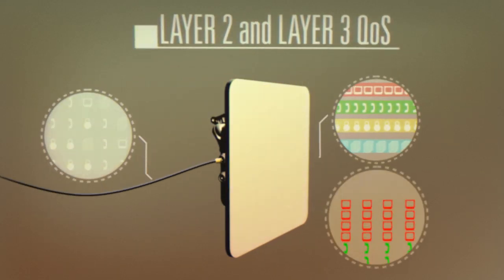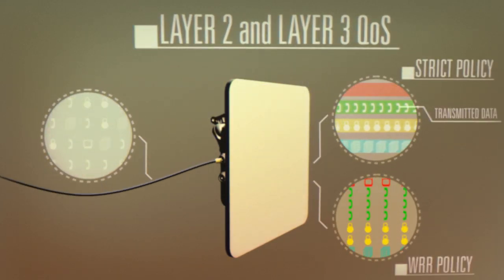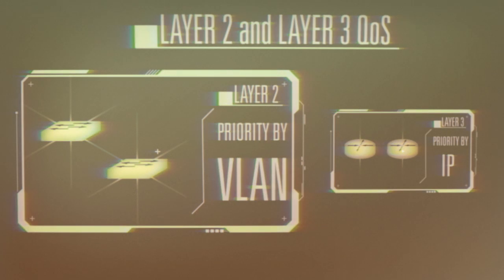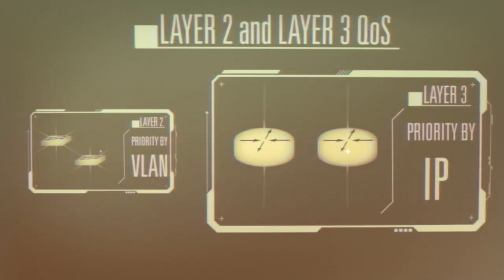Additionally, the new devices support Layer 2 and Layer 3 QoS, which allows prioritization of mission-critical data going over a wireless link. In Layer 2 QoS data is prioritized according to VLANs while in Layer 3 it's according to IP addresses.